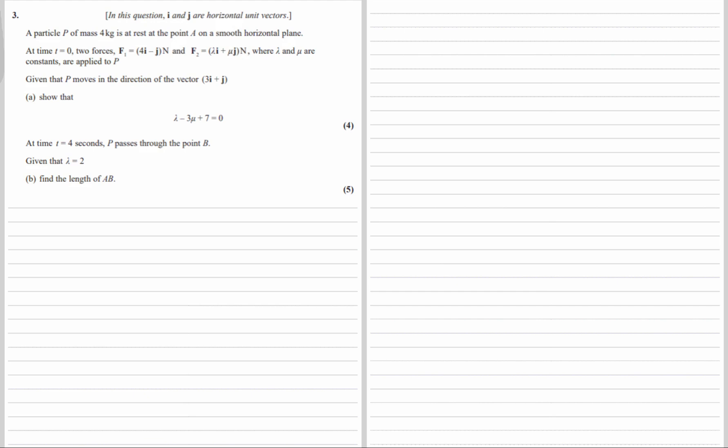A particle P of mass 4 kilograms is at rest at the point A on a smooth horizontal plane. At time t equals zero, two forces F1, which is 4i minus j newtons, and F2, lambda i plus mu j newtons, where lambda and mu are constants, are applied to P. Given that P moves in the direction of the vector 3i plus j, show that lambda minus 3mu plus 7 equals zero.